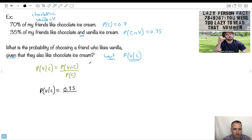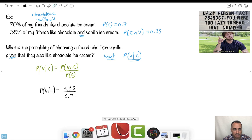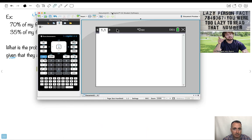All that divided by probability of chocolate, which is 0.7. I just do that on my calculator. That's all I need to do. So 0.35 divided by 0.7, I get 0.5.